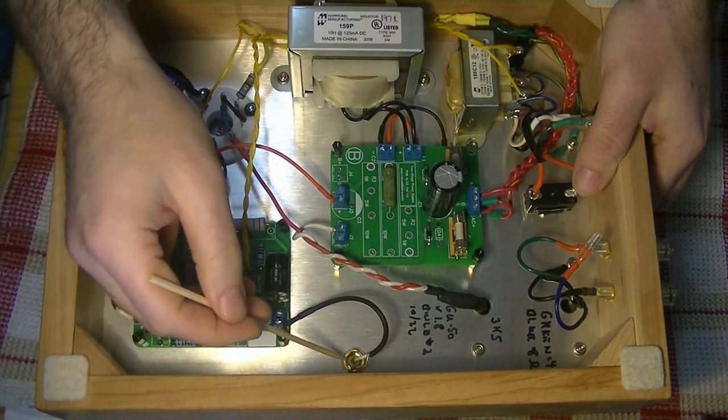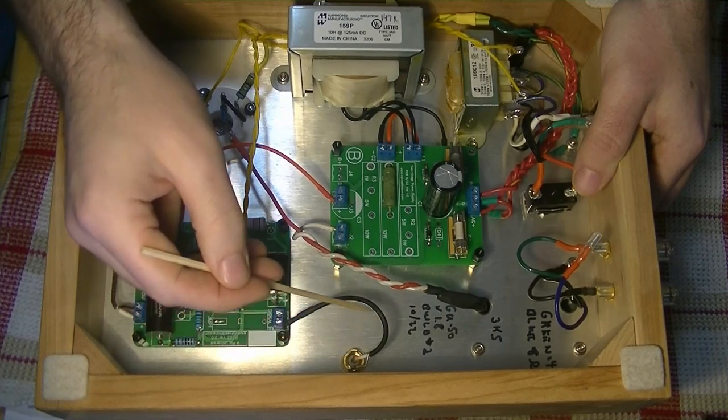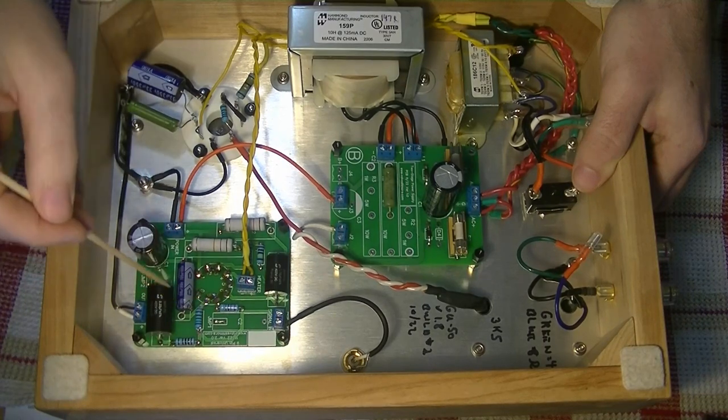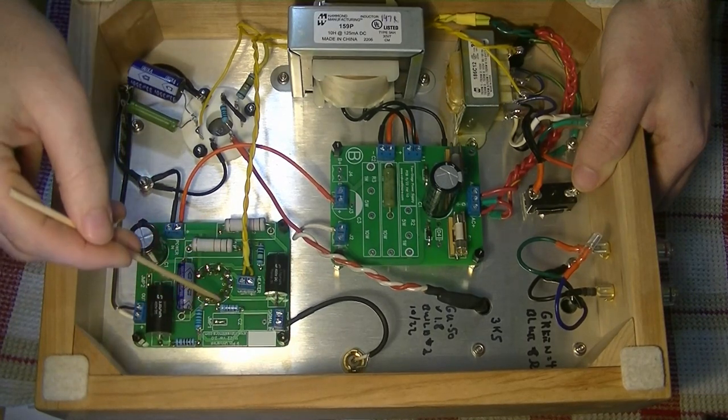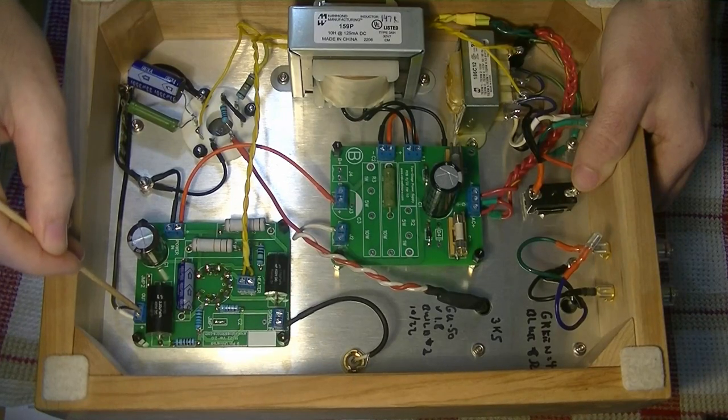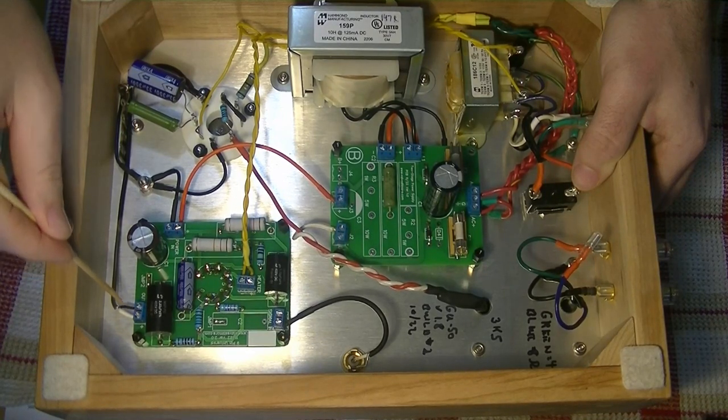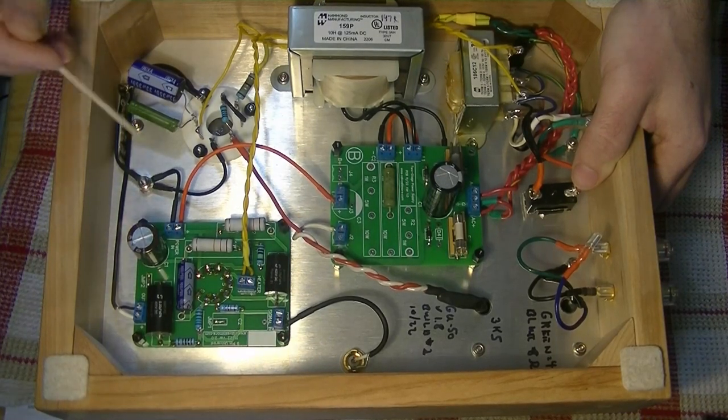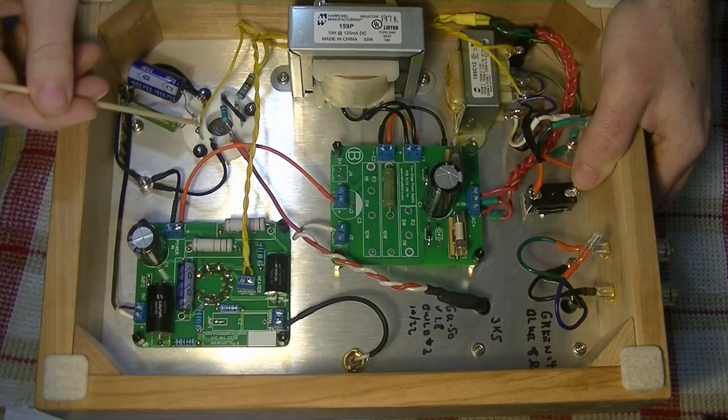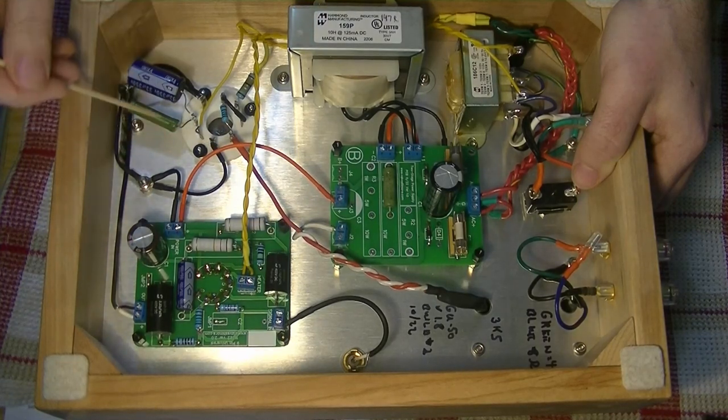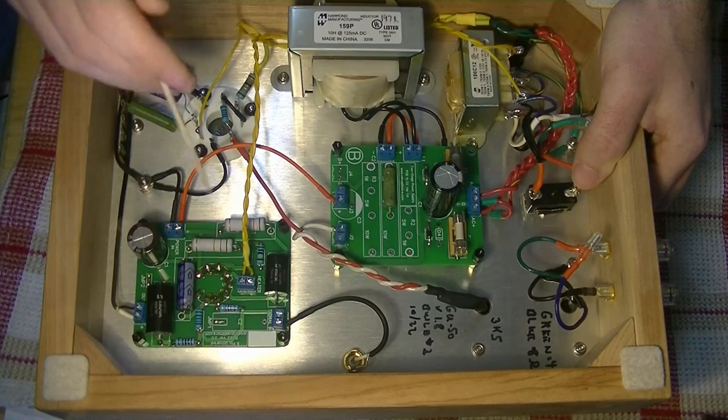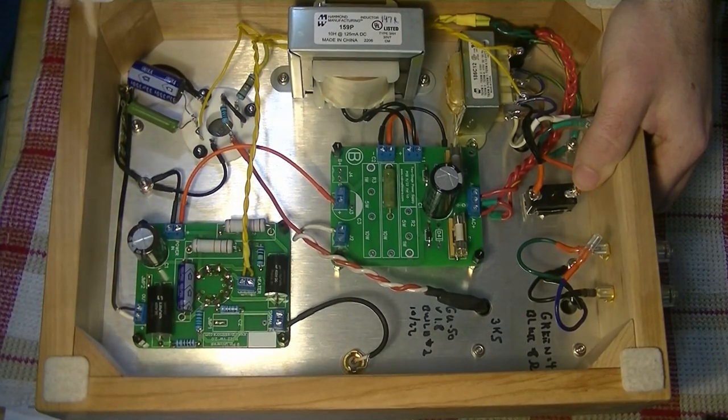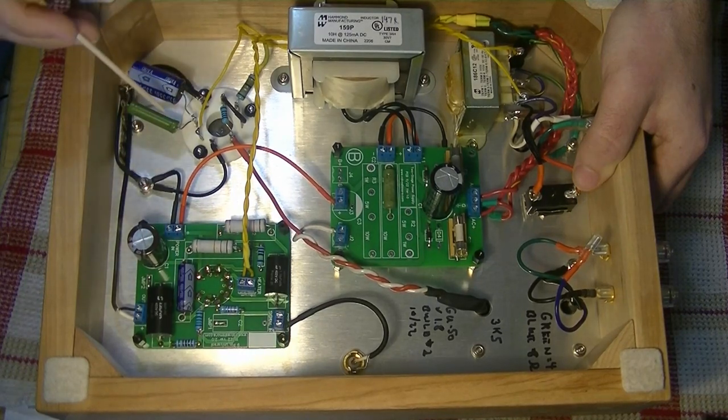Here's our RCA input with the signal cable going into our driver board, and this is the 6N6P driver. It comes through the board, out over here after the amplification, and then over to the GU50 input on the grid. This, of course, is the GU50 socket. And it looks a little bit complicated in here, but this circuit is actually incredibly simple, and we're going to take a look at the schematic in a little bit here to give you a better idea of what's going on.